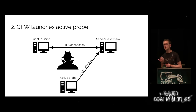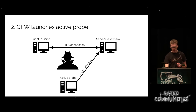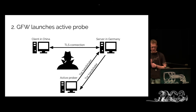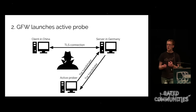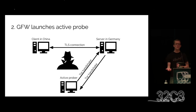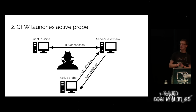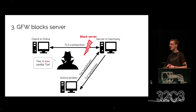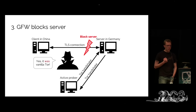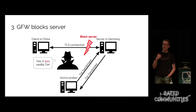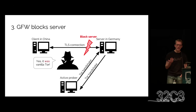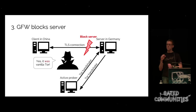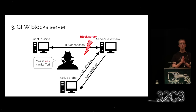They need certainty because if they end up blocking it and it's some important financial application, they'd be screwing with their own economy. So what they do in the next step is launch a short-lived probe that connects to the same server in Germany and tries to speak the Tor protocol. This is just a guess — worst case the server terminates the connection, but perhaps it answers with a Tor handshake. If that happens, the firewall has what it needs. It's a two-stage system: first DPI on lots of traffic, then active probing on a suspicious subset.